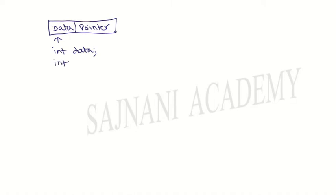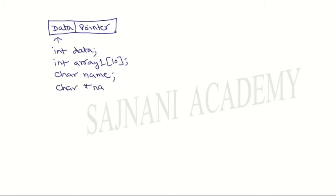Data can be any C data type. For example, we can include int data, we can add an int array of 10 elements, we can include char name, we can include an array of char, that is a char pointer name. So we can include any data type in the data part. Since a node is created randomly in the heap or memory, linking among them is necessary. This linking is provided by the second part of the node, that is the pointer.